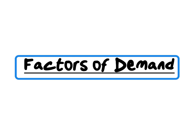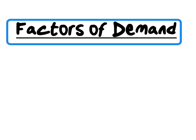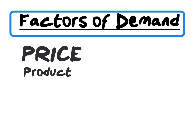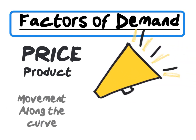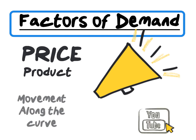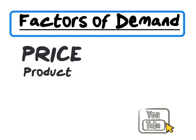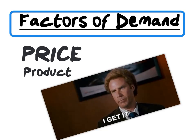The first factor of demand is the price of the product. It's important to note that any change in the price of the product is illustrated as a movement along the demand curve. For more detail on how the price of the product can be illustrated on the demand curve, please watch the previous Part 4 video. The only factor illustrated as a movement along the curve is the price of the product.